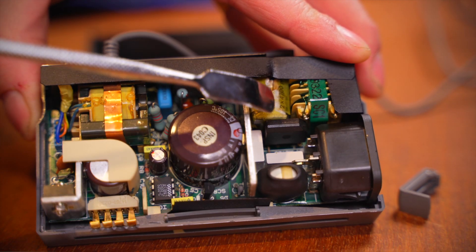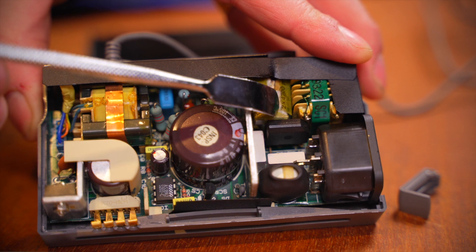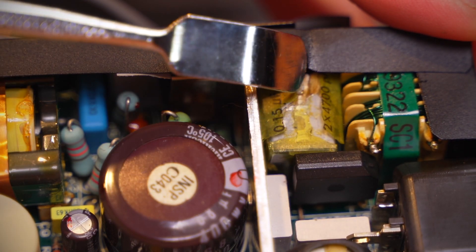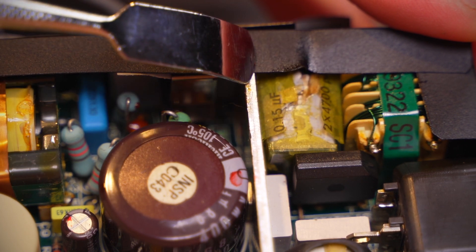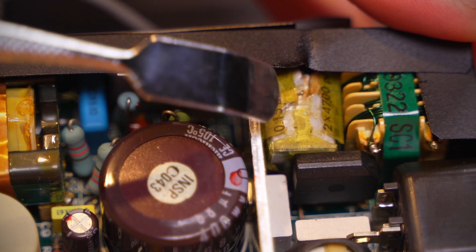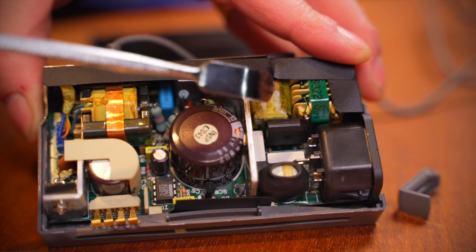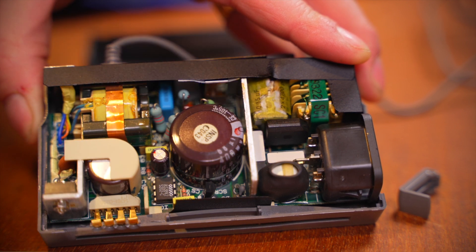So given where that marking is on the case it was above this section here and you can see that there's something going on with this thing and there's a bit of melting on this bit of plastic shielding here. So let's have a look further at what this thing is and see if it's a replaceable item and we can get this thing working again.